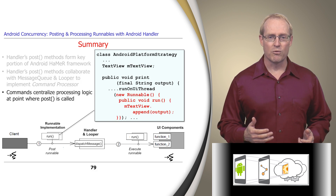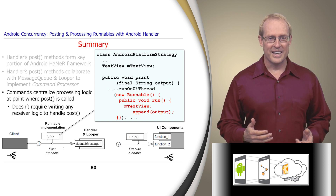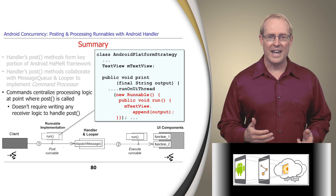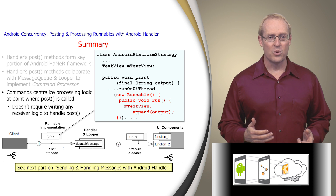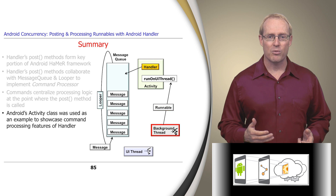The handler's use of runnable commands centralizes the processing logic at the point where the post method is invoked, so there's no need to write separate receiver logic to handle the post. In contrast, the handler's send message methods require developers to explicitly extend the handleMessage hook method, as shown in the next video. To showcase the command processing features of handler, we analyzed an example of the Android activity class runOnUiThread method, which uses an internal handler object to ensure runnable actions passed to it from background threads are executed in the context of the user interface thread.